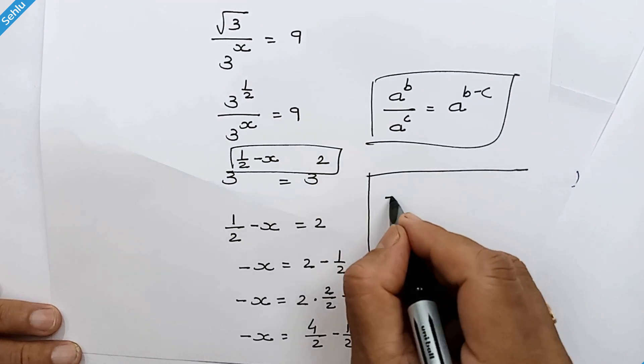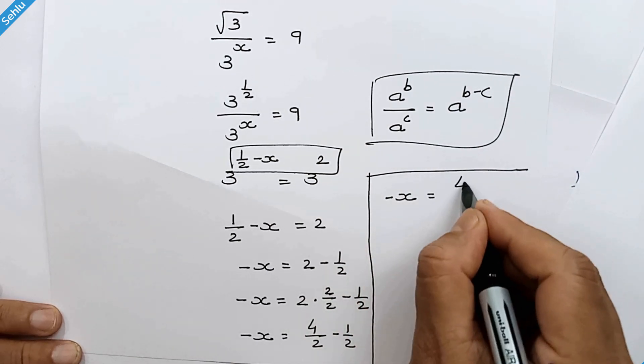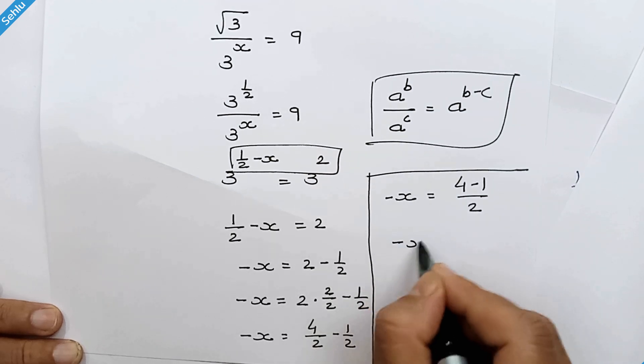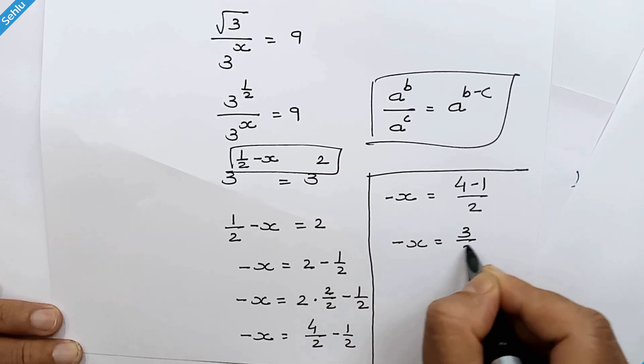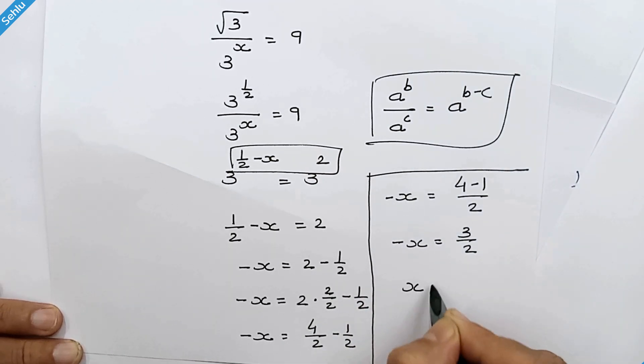So we have negative x is equal to 4 minus 1 over 2. Negative x is equal to 3 over 2. So x is equal to negative 3 over 2.